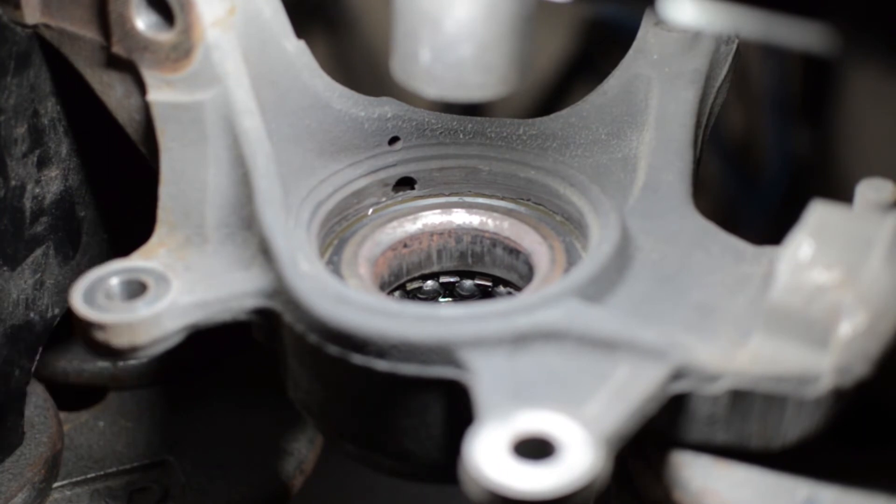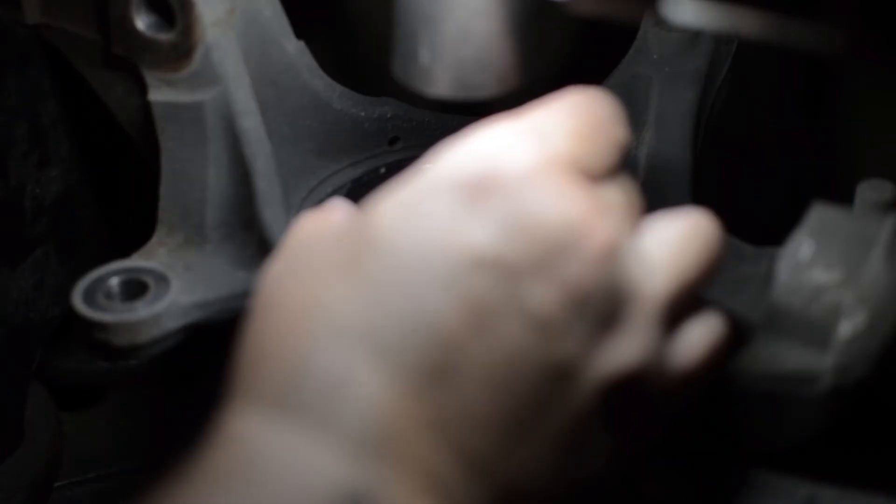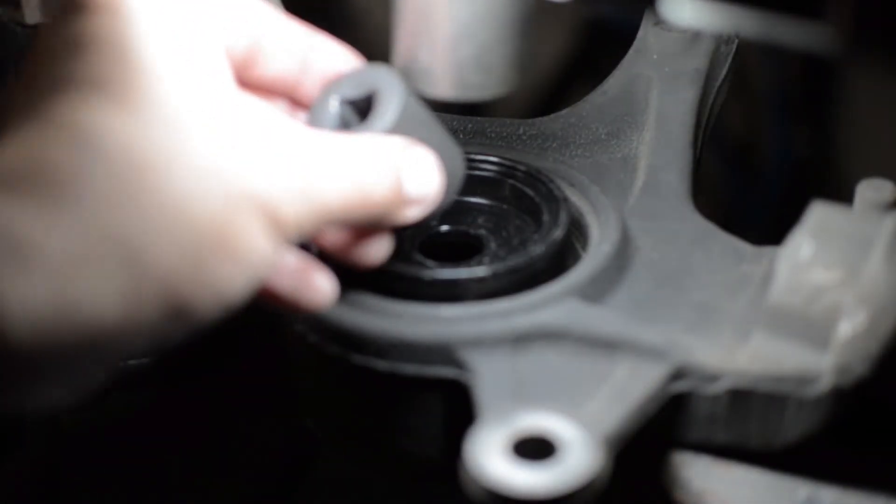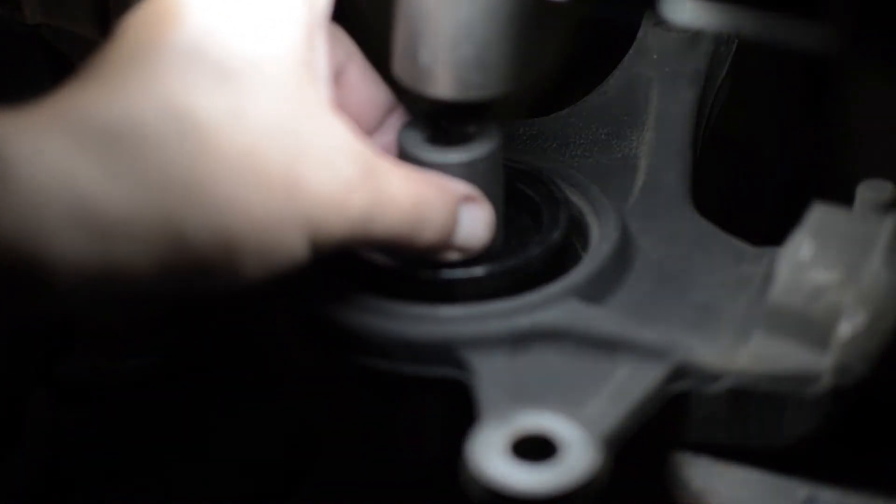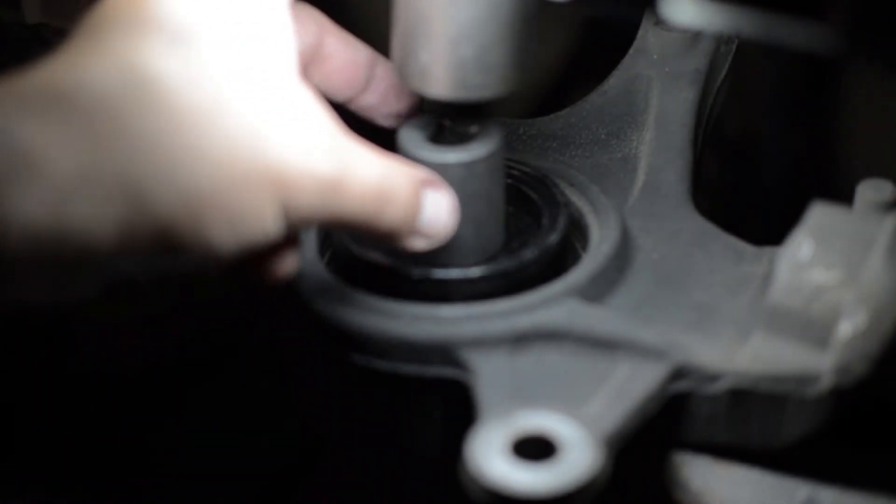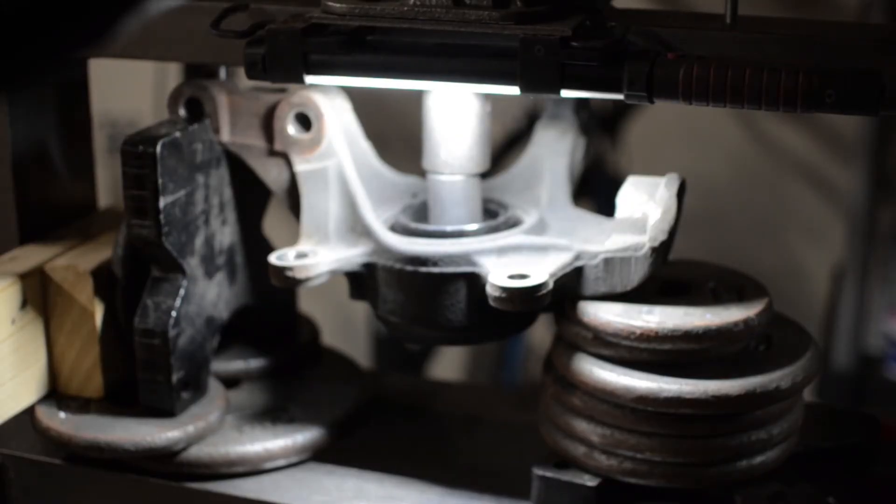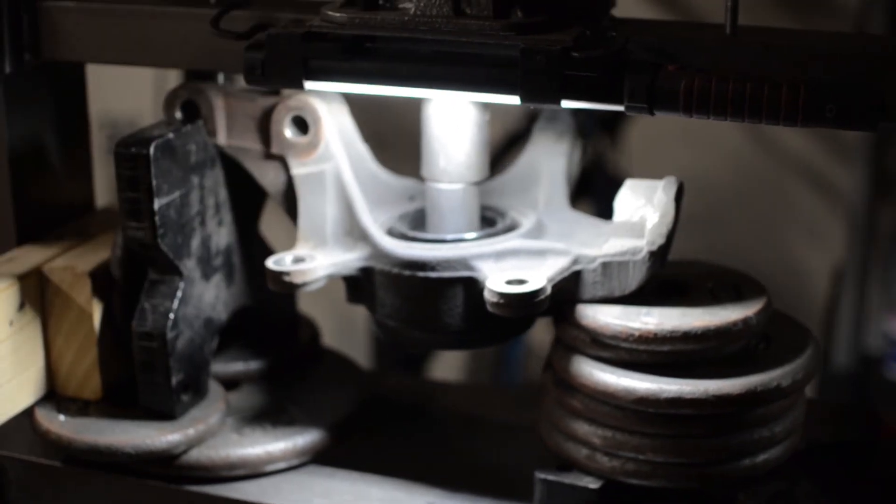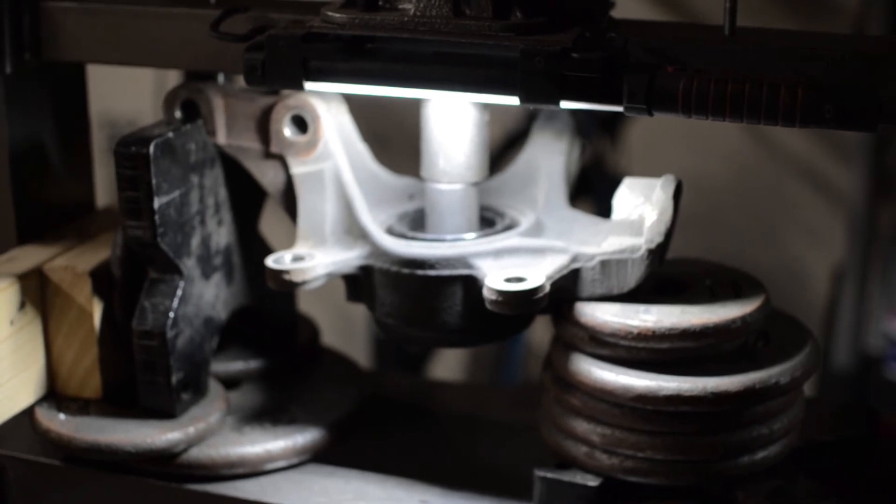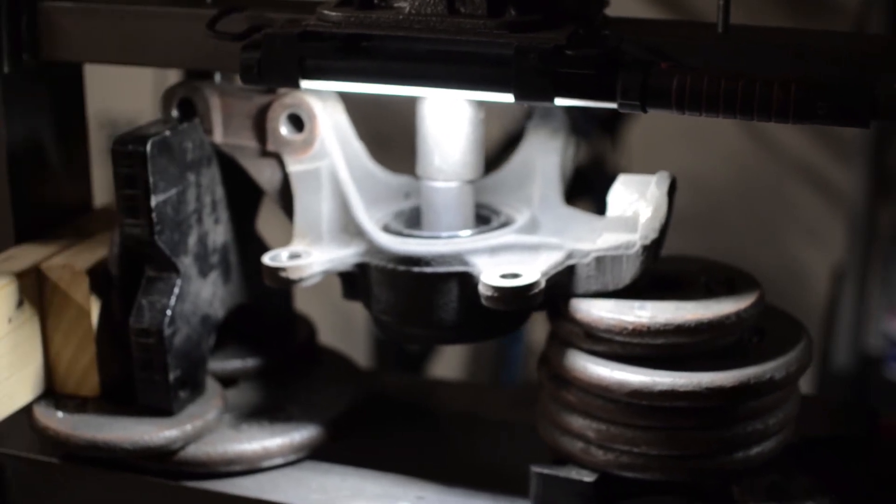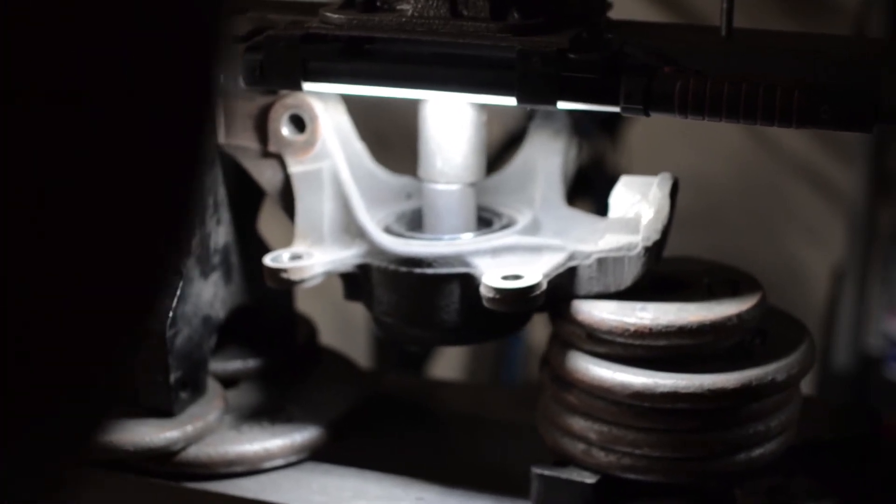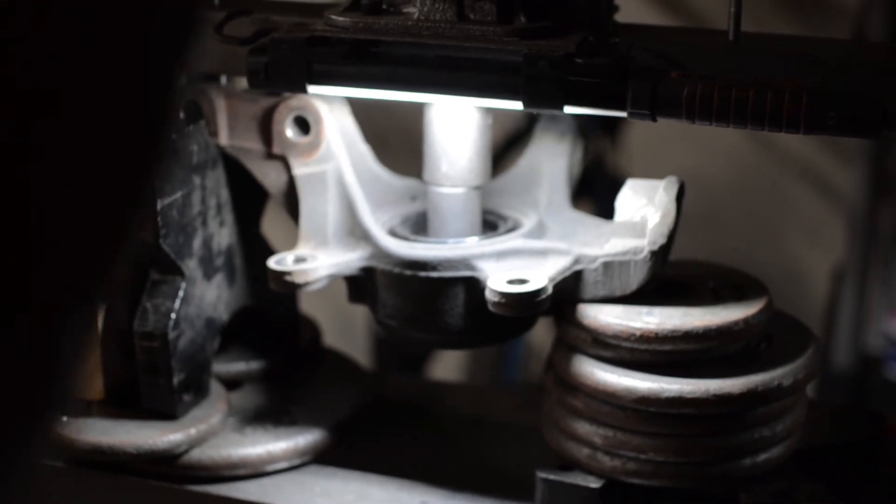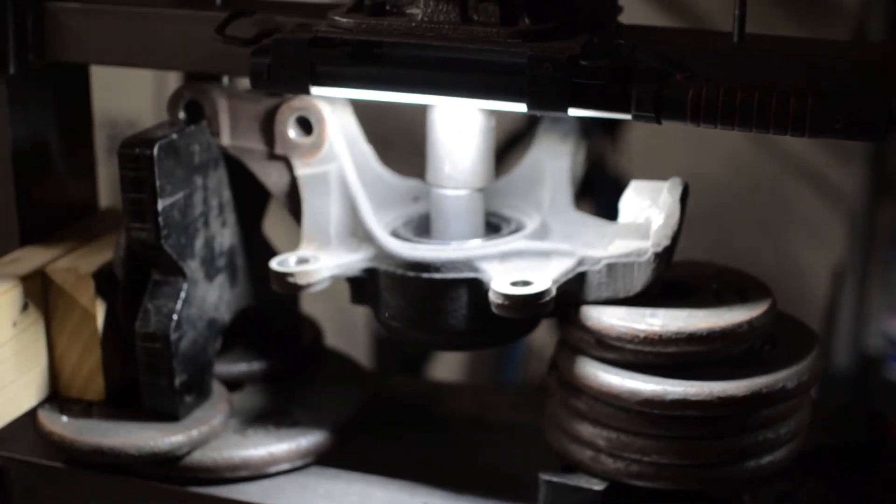I've already placed the steering knuckle assembly on the shop press so we can push out the bearing. I'm using a socket here. Now we're ready to press out the bearing. It does take a lot of pressure, so don't be surprised that it's not coming out very easy.